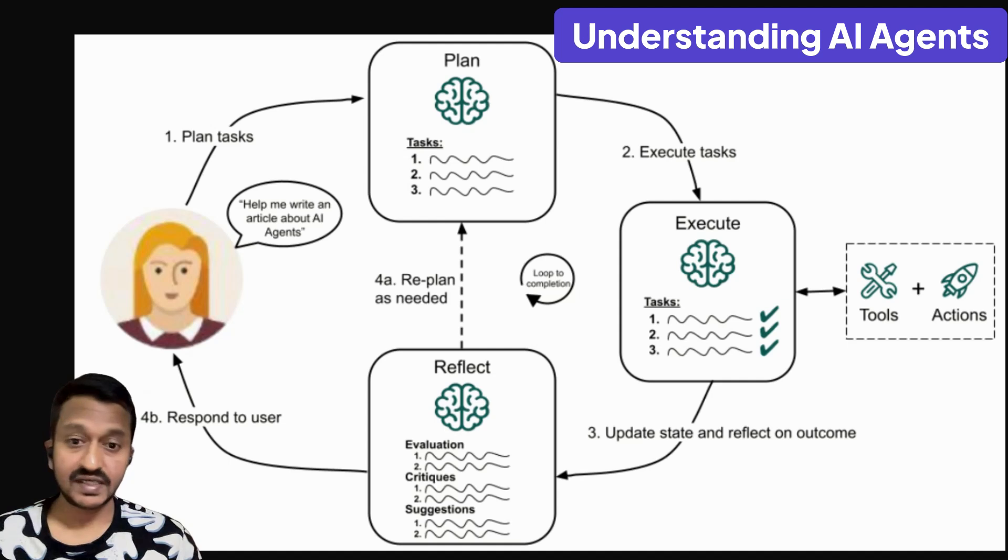The agent starts by planning the tasks it needs to perform. This includes defining the specific steps or actions required to accomplish the goal. Then the execution step comes in where once the plan is established,